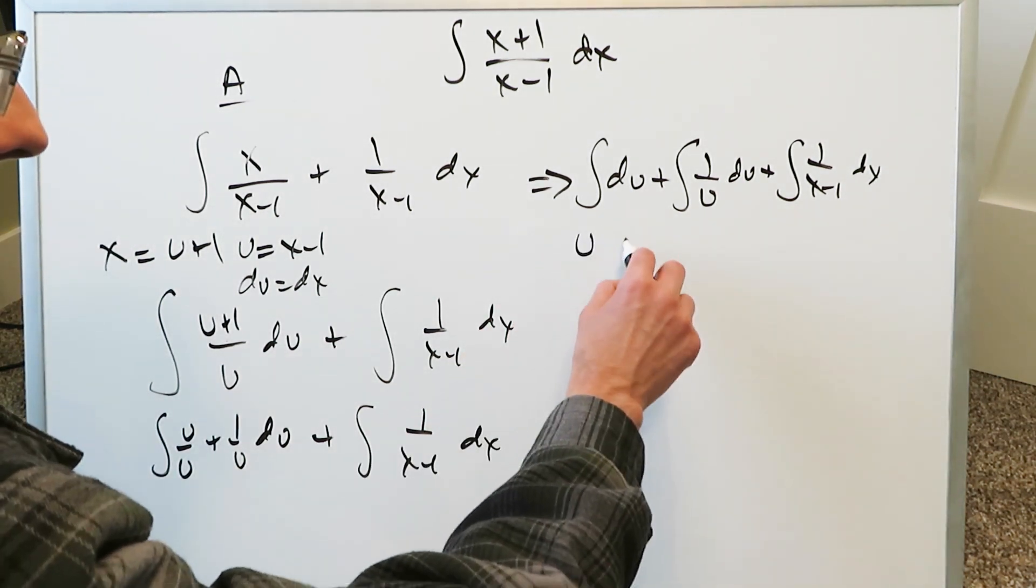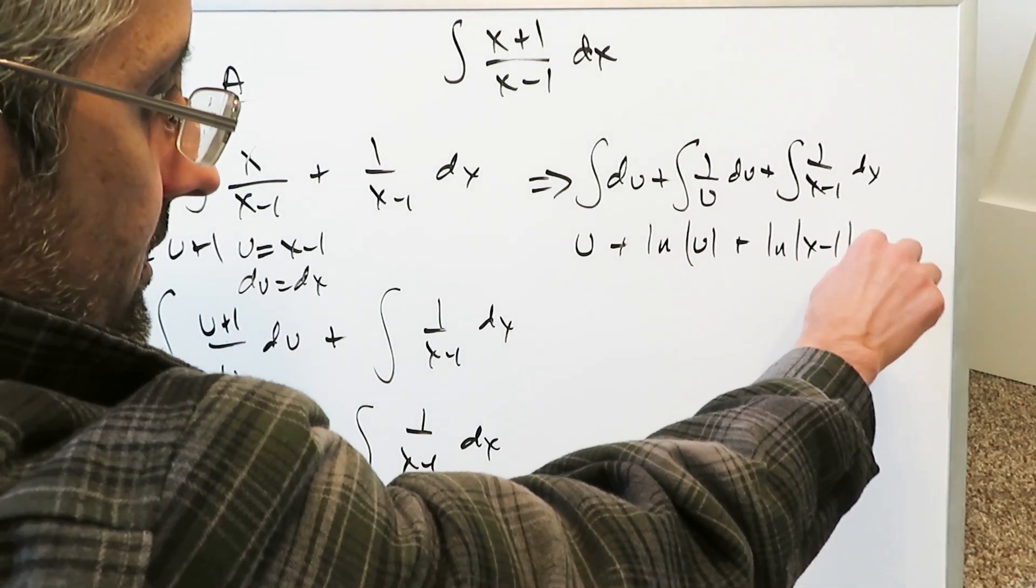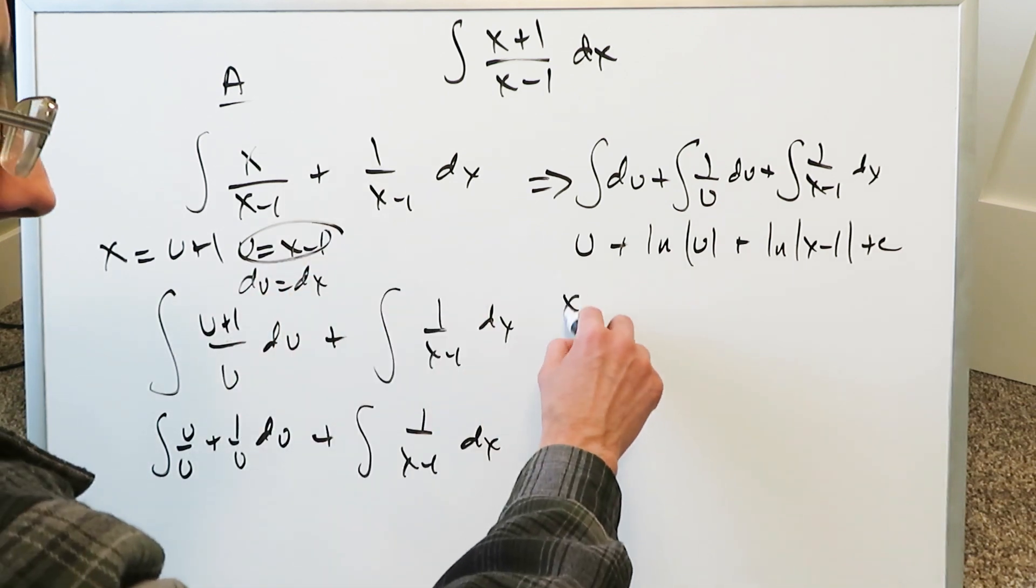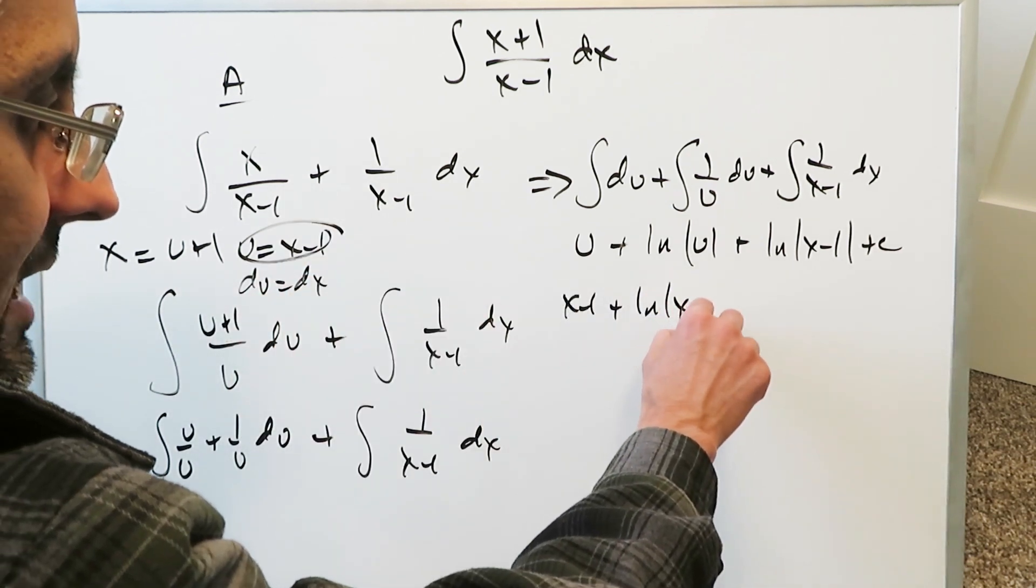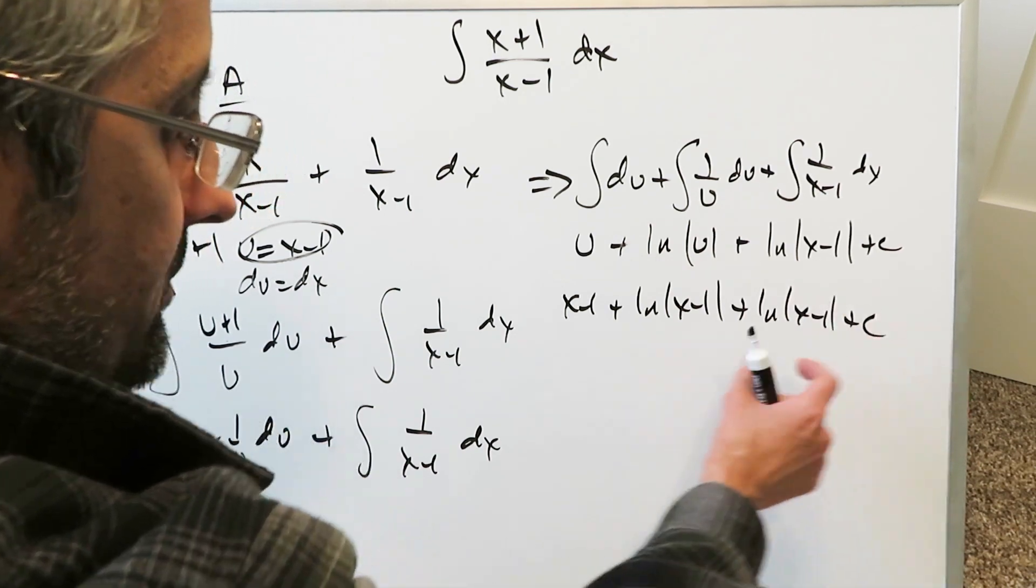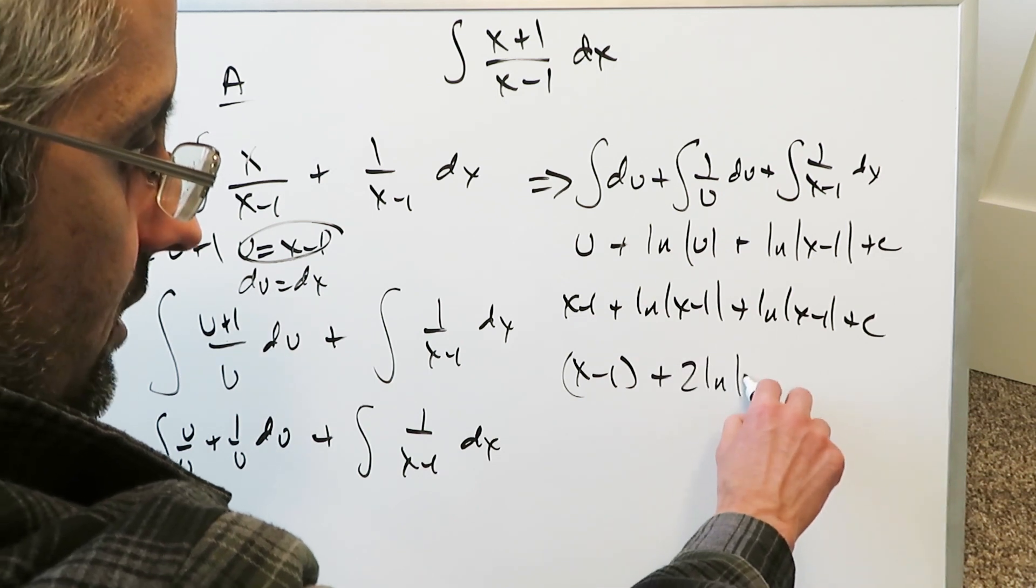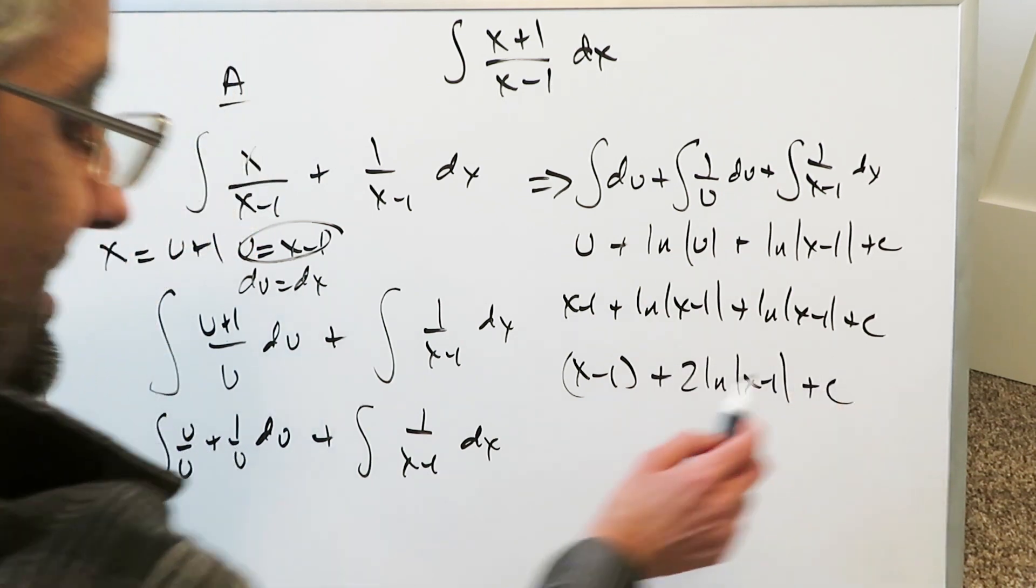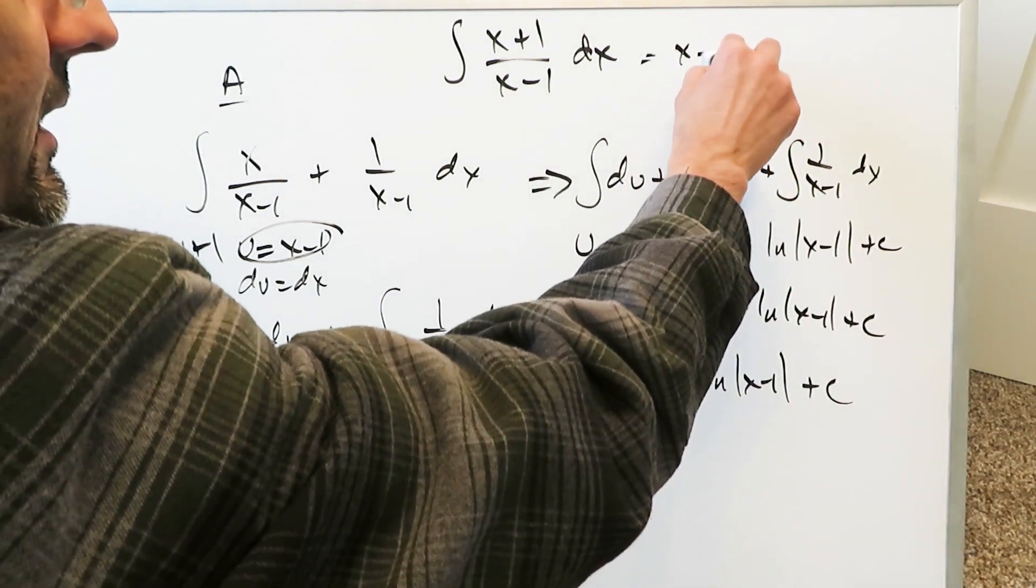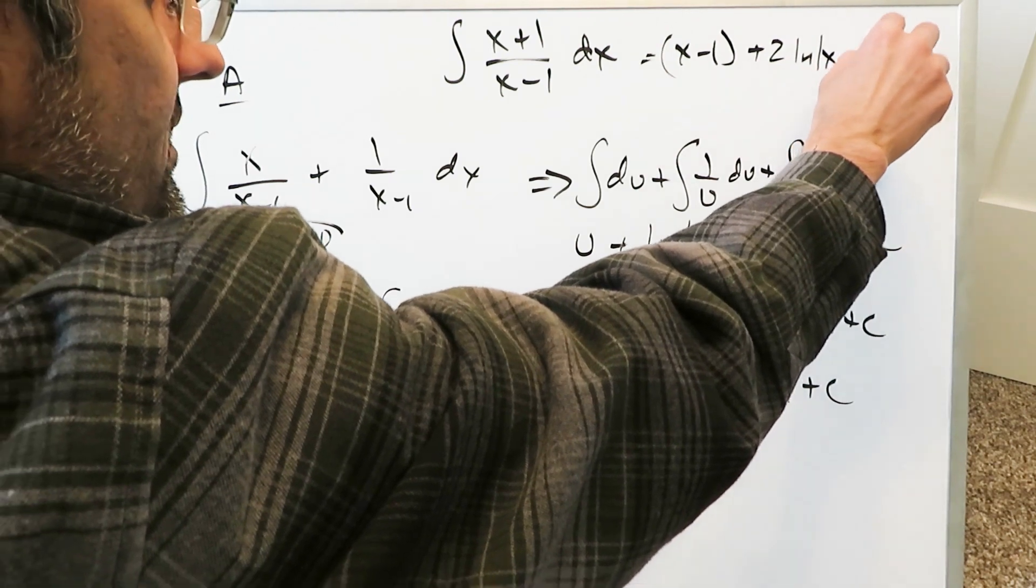What you end up having so far is this du coming from right over here plus integral 1 over u du plus this right here integral 1 over x minus 1 dx. This is just going to generate a u. This will generate a natural log u and this right here will generate natural log x minus 1 plus c. When you resubstitute the u which is x minus 1 you have x minus 1 plus natural log x minus 1 plus natural log x minus 1 plus c but these can be combined. Your answer is x minus 1 plus 2 natural log x minus 1 plus c.